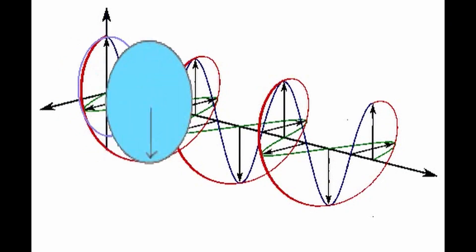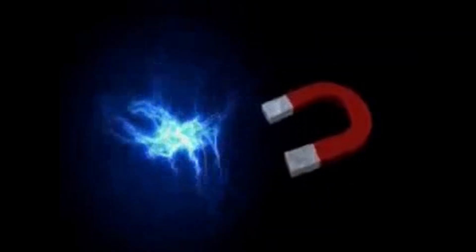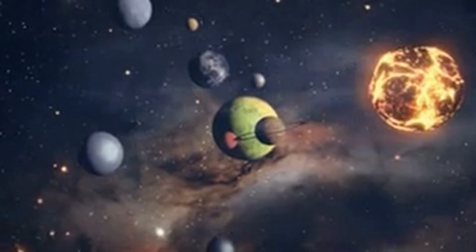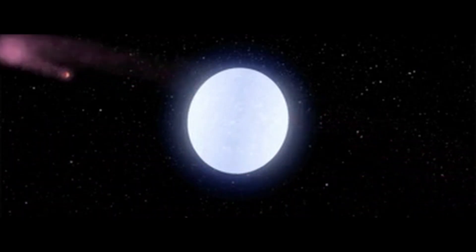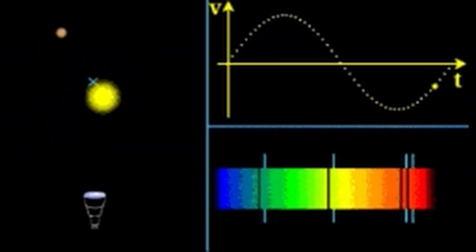Electromagnetism: The Biot-Savart law describes the magnetic field created by an electric current. For an infinitely long straight wire, the magnetic field at a distance r from the wire is B = (μ₀I)/(2πr), where μ₀ is the magnetic permeability of the vacuum and I is the current intensity. Orbital mechanics: The period T of an object in circular orbit is given by T = 2π√(a³/G(M+m)), where a is the semi-major axis of the orbit, G is the gravitational constant, and M and m are the masses of the central and orbiting bodies, respectively.